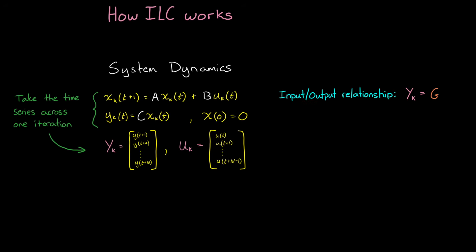And then from here, we can write the input-output relationship as YK equals some matrix G times UK. And G is the input-output matrix defined by the system dynamics.